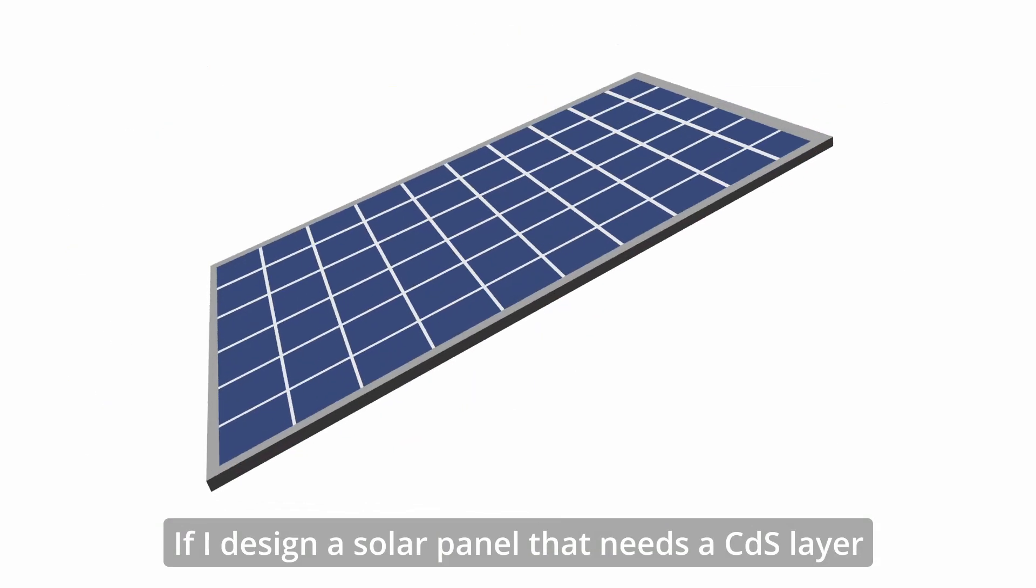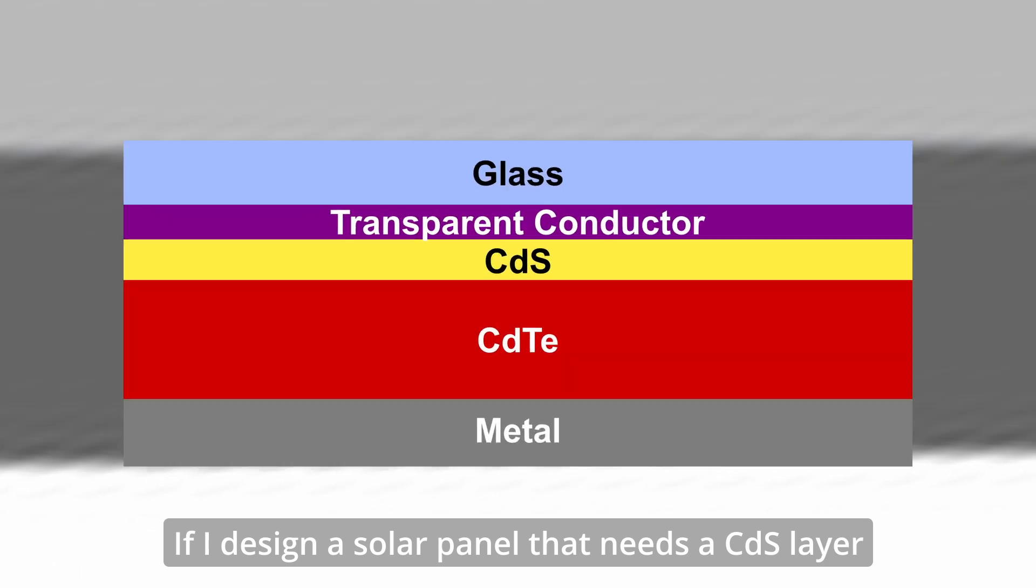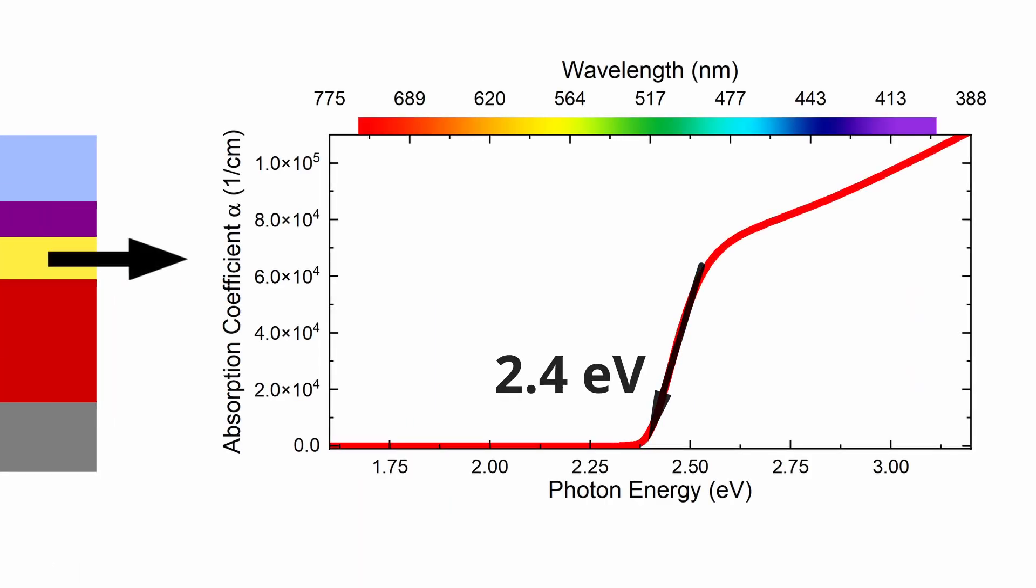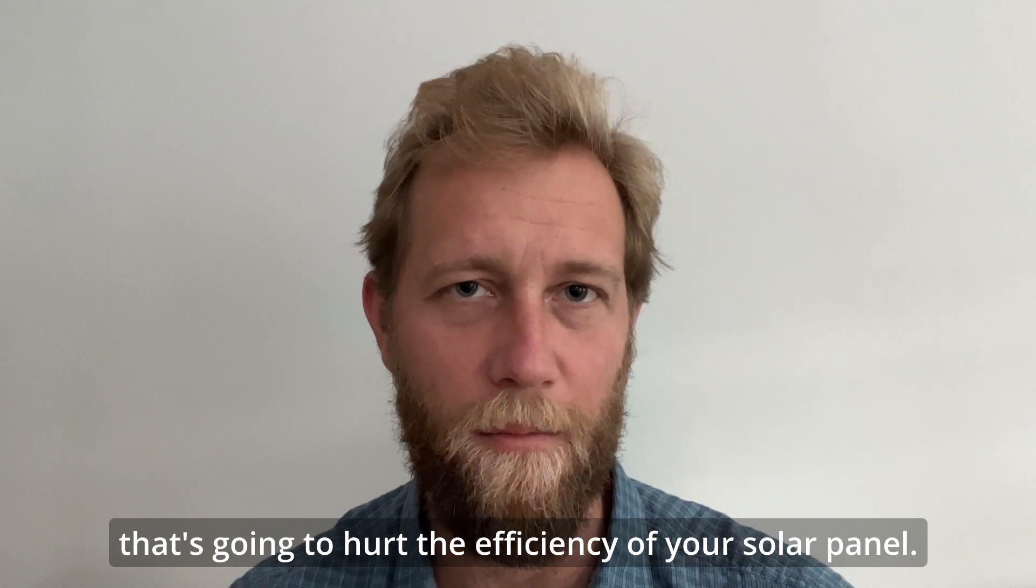If I design a solar panel that needs a cadmium sulfide layer with a band gap of 2.4 electron volts, but really it ends up being more like 2.2 electron volts, that's going to hurt the efficiency of your solar panel.